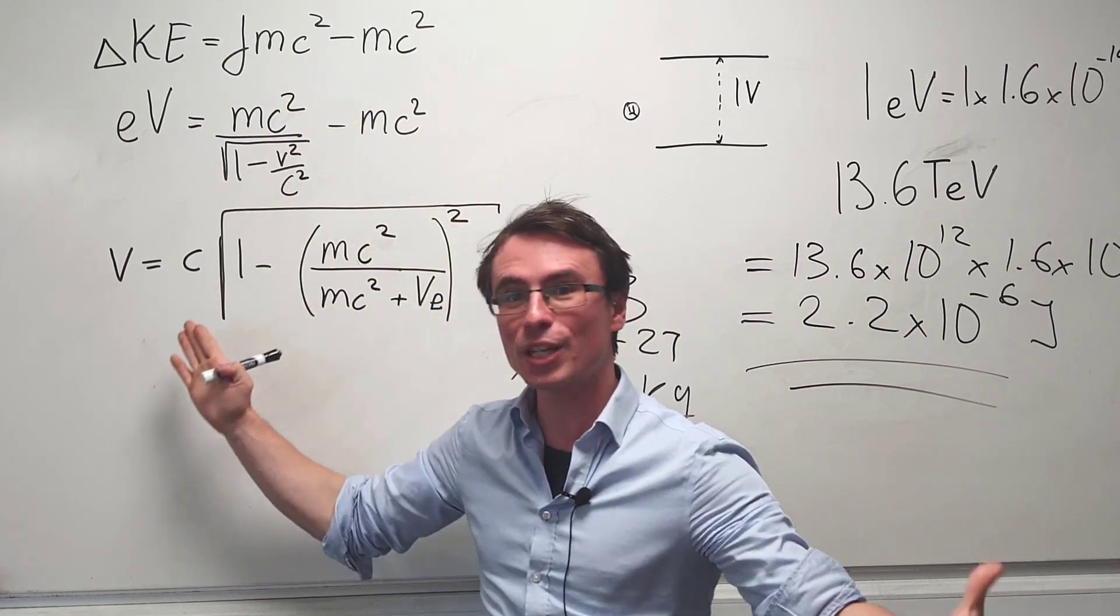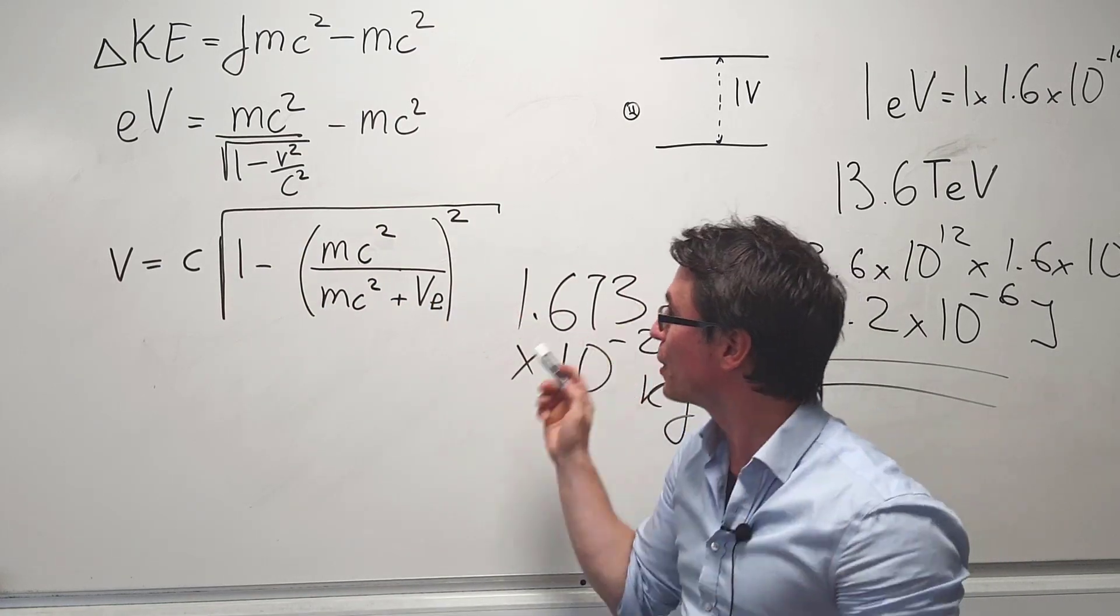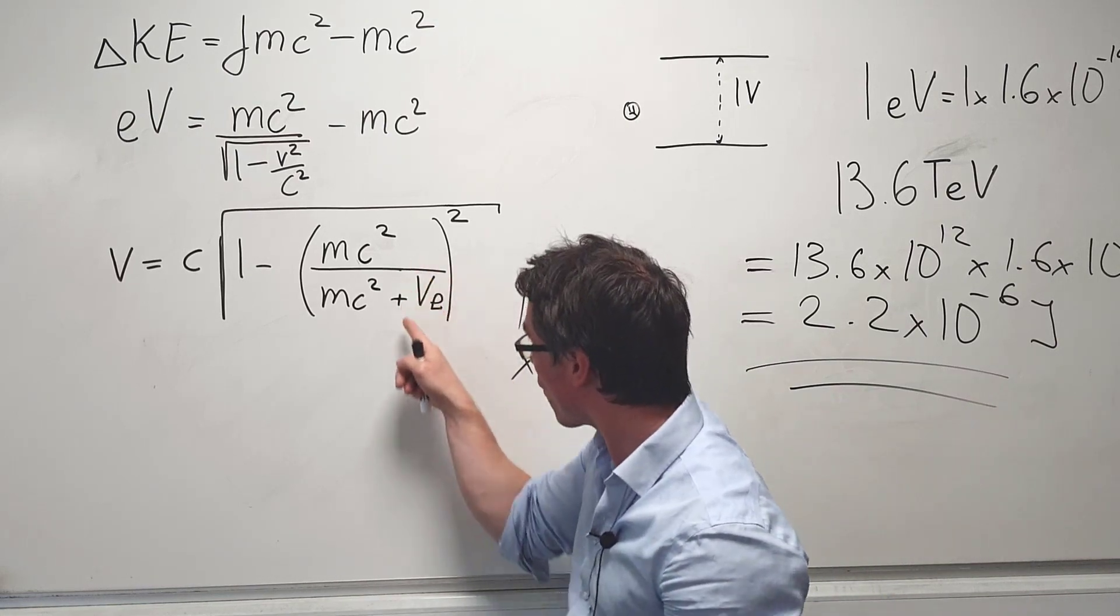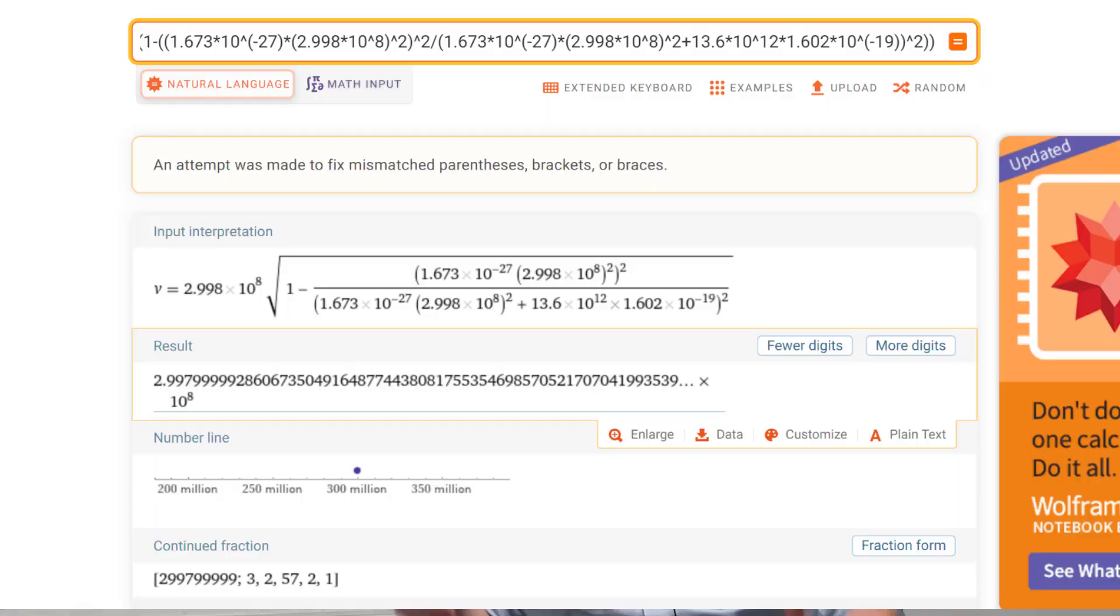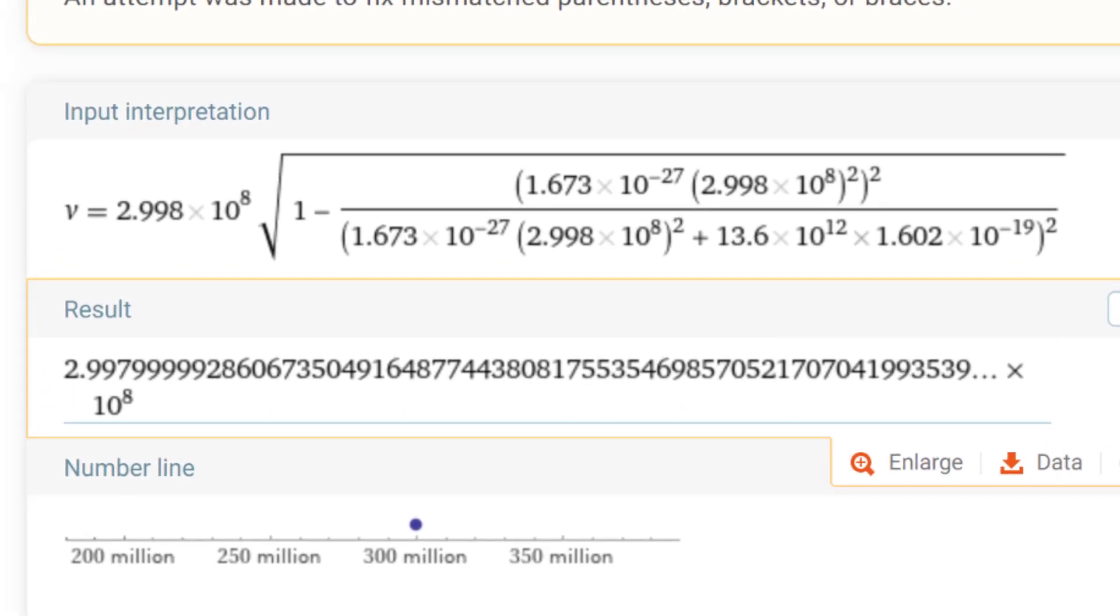If we were to rearrange this equation for v we would get the following expression, and if we input 13.6 tera electron volts for the change in kinetic energy term, which is this one over here, we would get an answer which is incredibly close to the speed of light.